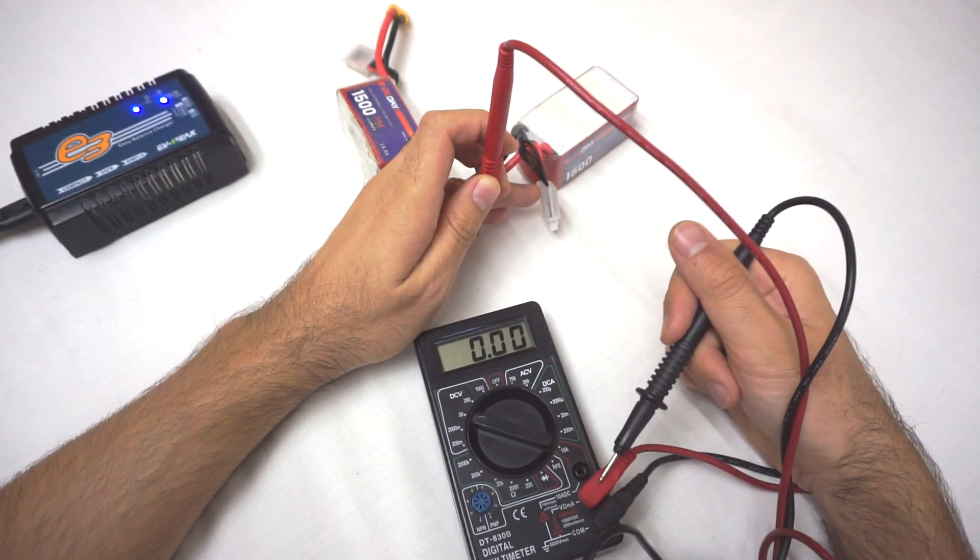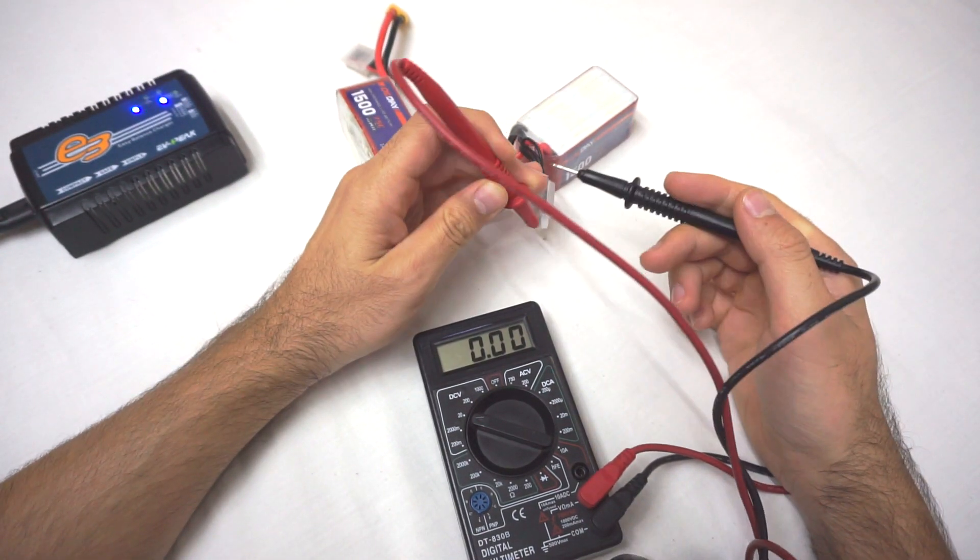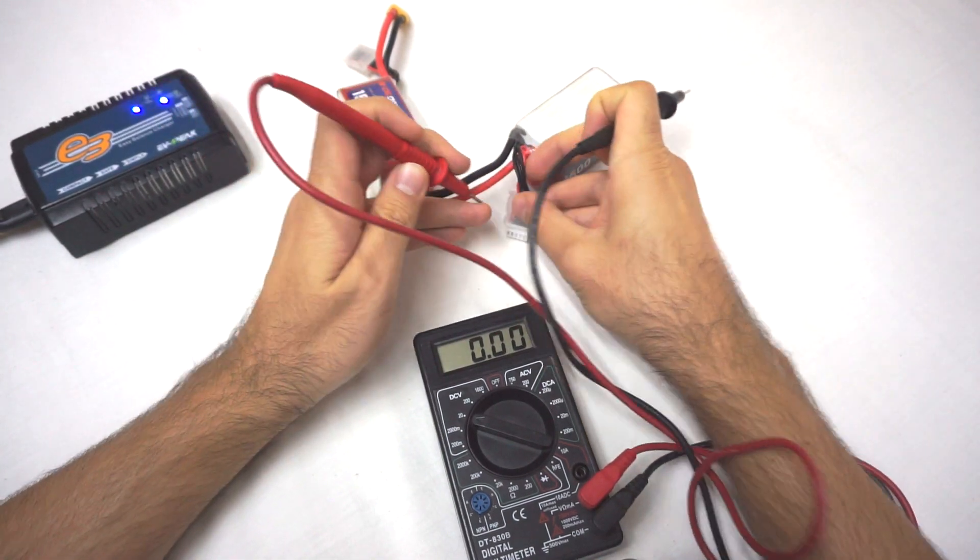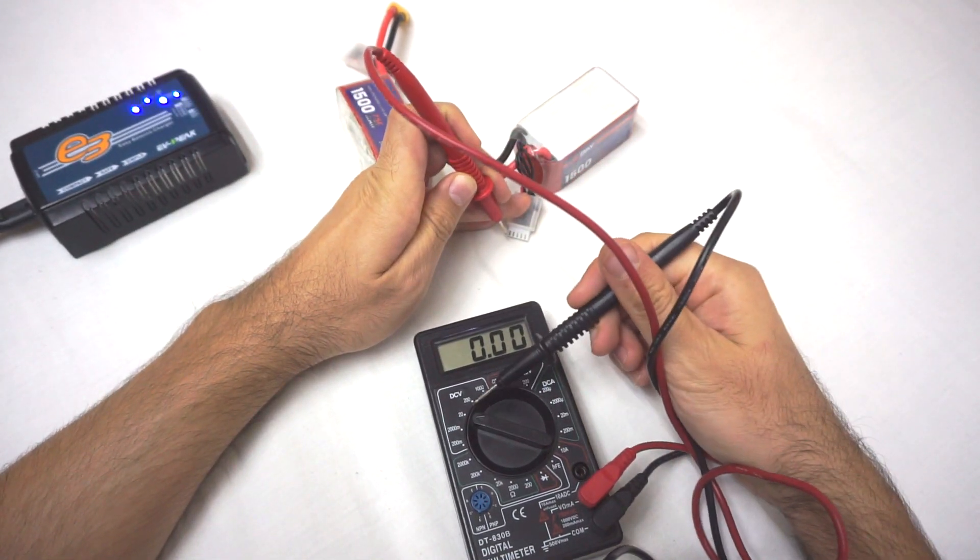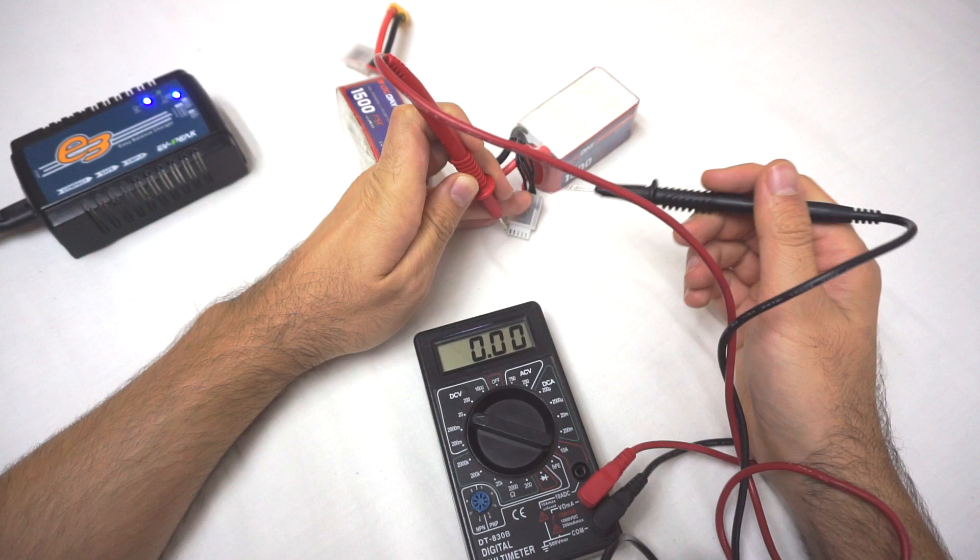Otherwise, if it's the red, if it's here, then it's short circuit between the two. Okay, and then it's set to 20 volts DC.